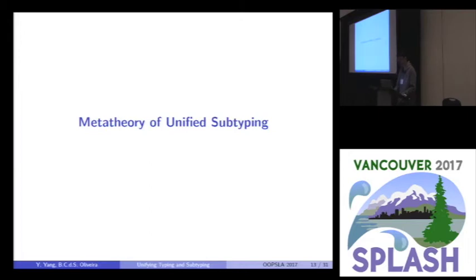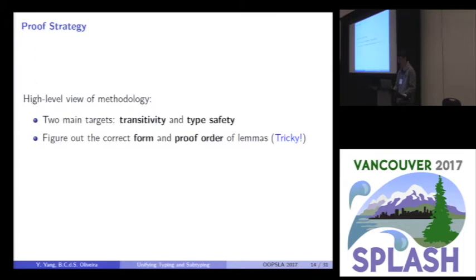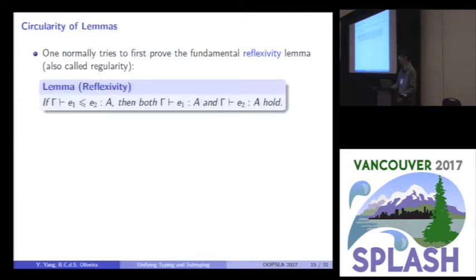And how to do the proofs? Here is the meta-theory of unified subtyping. The high-level view of the methodology goes into three steps. First, we set up two main targets or properties of our calculus. The transitivity and type safety. And the second step is the trickiest one. We need to figure out the correct form and the proof order of lemmas. Finally, we can just use the standard induction techniques in TAPL to finish the proofs. We focus on the second step. Here is a case study on it. So, normally, one tries to prove the fundamental lemmas, like these reflexivity lemmas first, or called regularity in some literature. This lemma basically ensures the explanation of unified subtyping correct. However, it is mutually dependent on the other lemma called correctness of types. And this is another fundamental lemma that's required by many other lemmas.